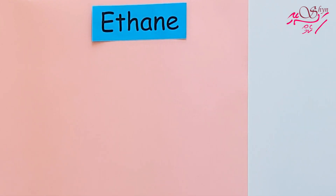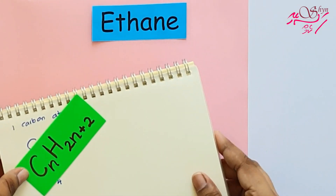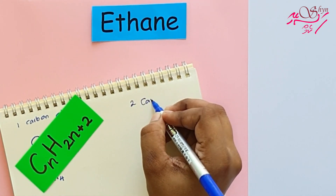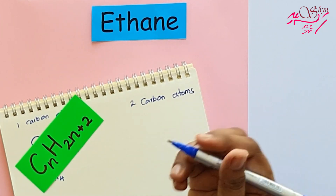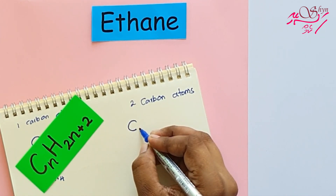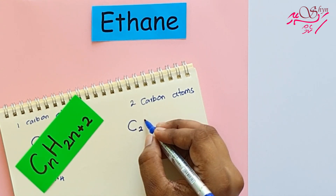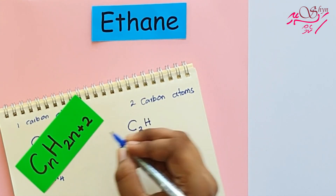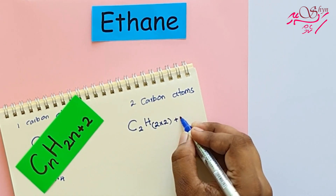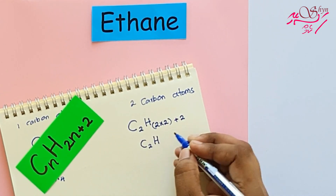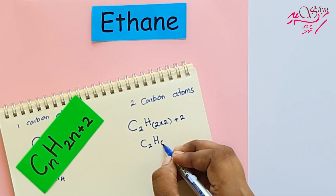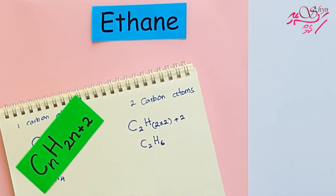Now let's look at ethane. It has two carbon atoms. Using the formula CₙH₂ₙ₊₂ with N=2: C₂H₂⁽²⁾₊₂, so 2 multiplied by 2 plus 2 gives H₆. The molecular formula is C₂H₆.